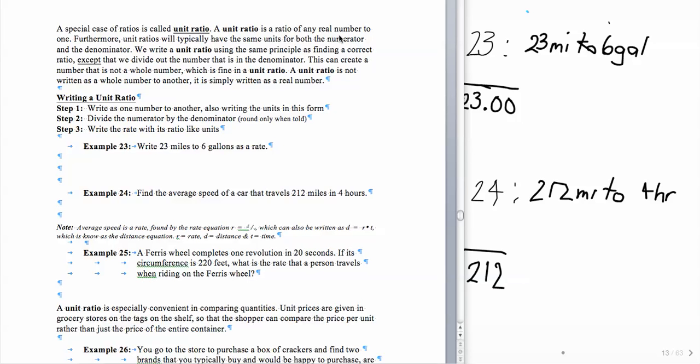This continues section 2.5. This time we're going to discuss the unit ratio. A unit ratio is a ratio of any real number to 1. And in the unit ratios we'll find the same principle that we did with a regular ratio except that we divide out the number that's in the denominator. And this creates what we call a unit ratio. A unit ratio is not written as a whole number to another. It's simply written as a real number. So we're going to follow the step process for writing a unit ratio.